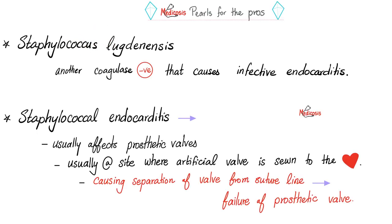Staph epidermidis is not the only coagulase-negative staph that causes infective endocarditis. There is another called Staphylococcus lugdunensis. Staphylococcal endocarditis infects the heart, especially the endocardium including the heart valves — particularly artificial prosthetic valves — usually at the site where the artificial valve is sewn to the heart tissue, causing separation from the suture lines and failure of the prosthetic valve.